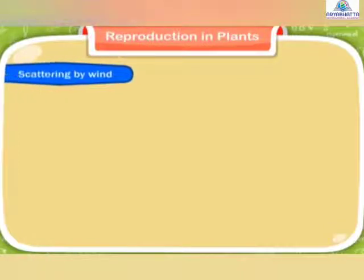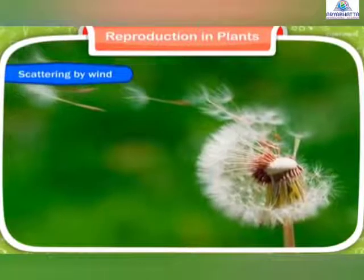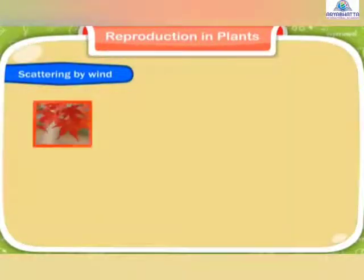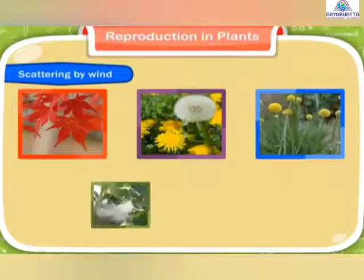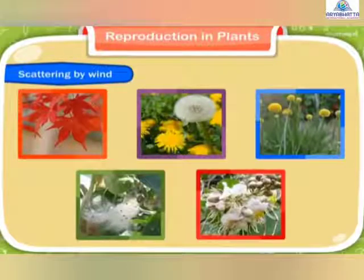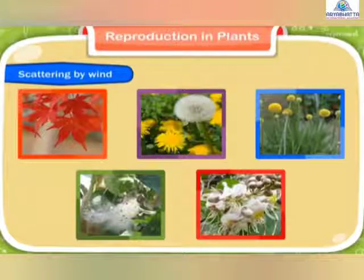Scattering by wind. Some seeds have long and fine hair on them. Seeds like maple, dandelion, drumstick, madar, and hyptage have wings or tufts of hair on them. These hair or wings help them to float in the wind.